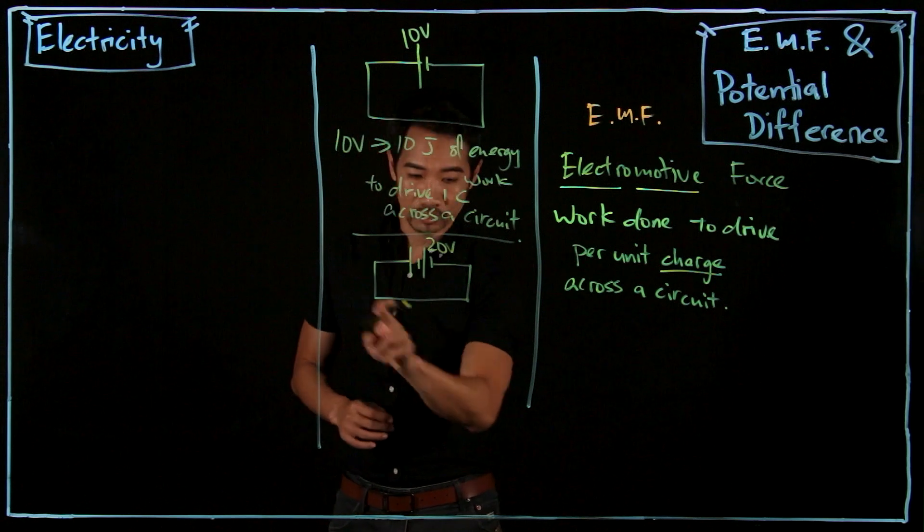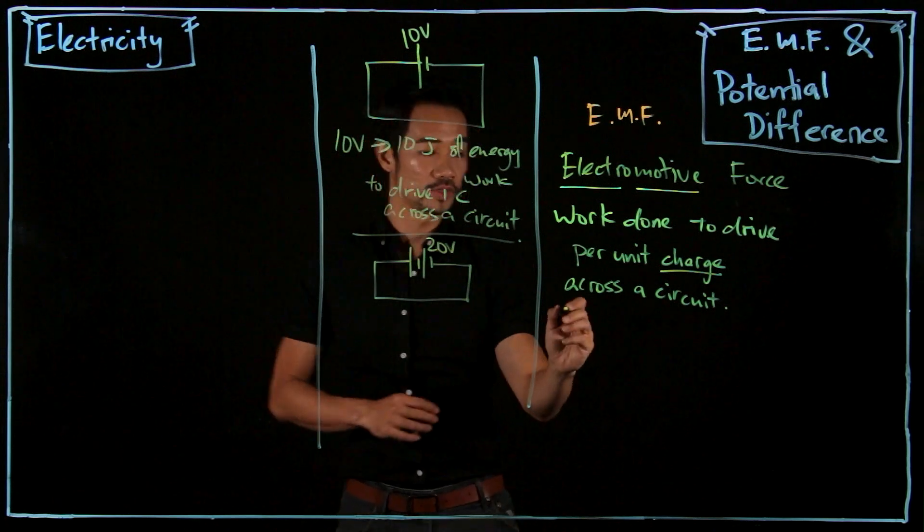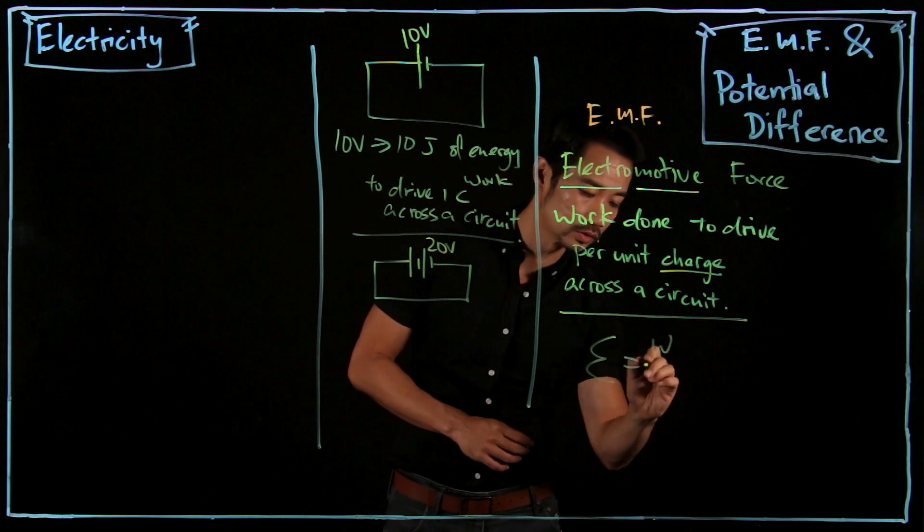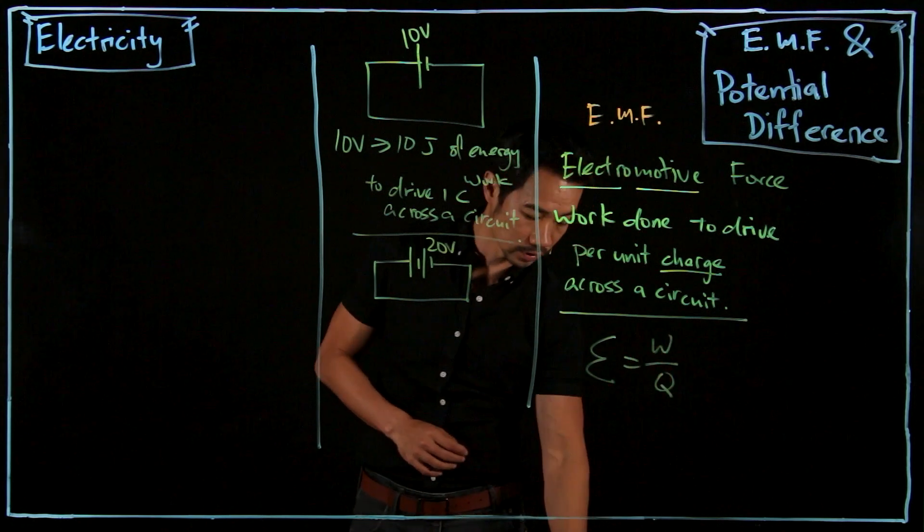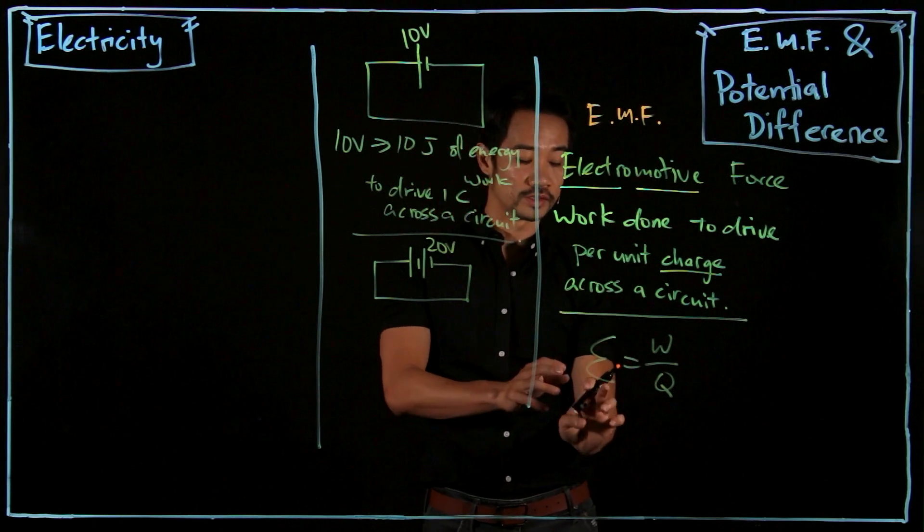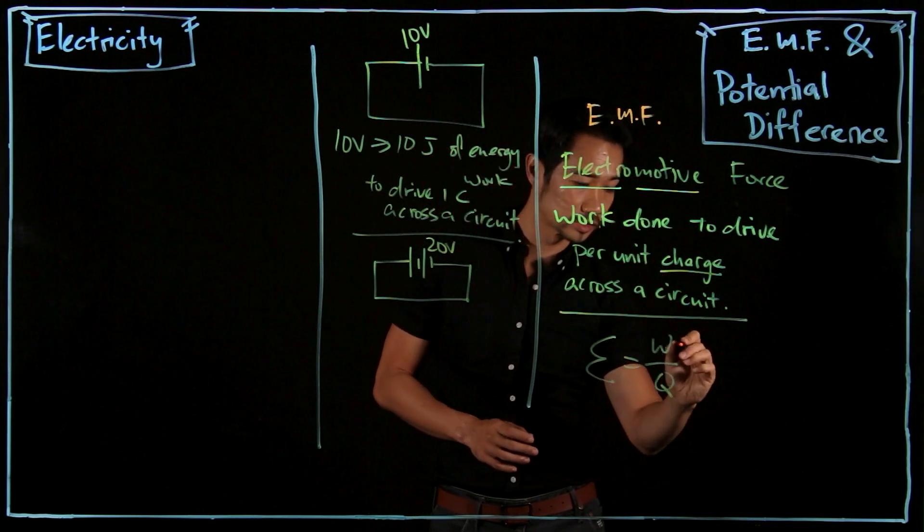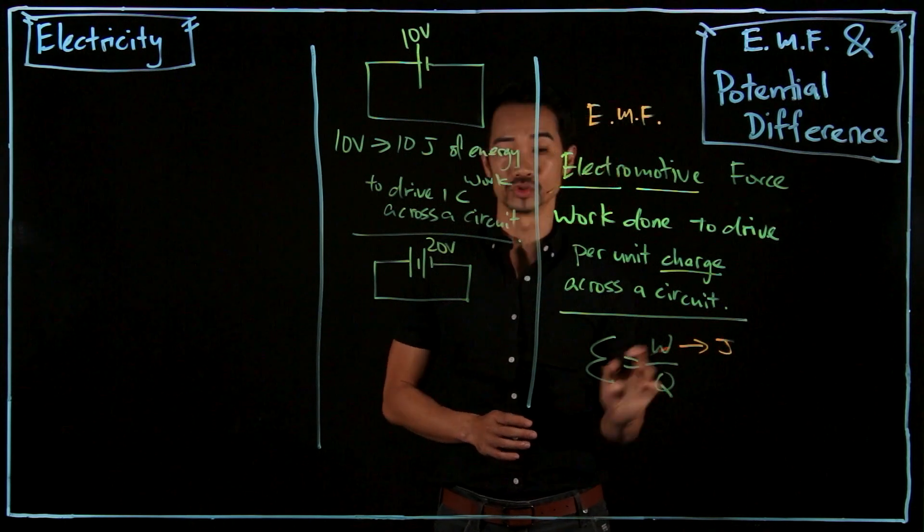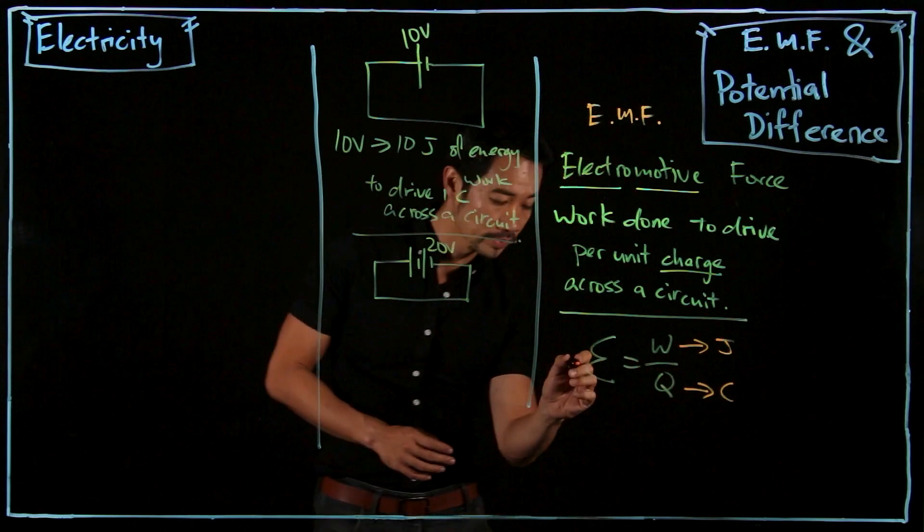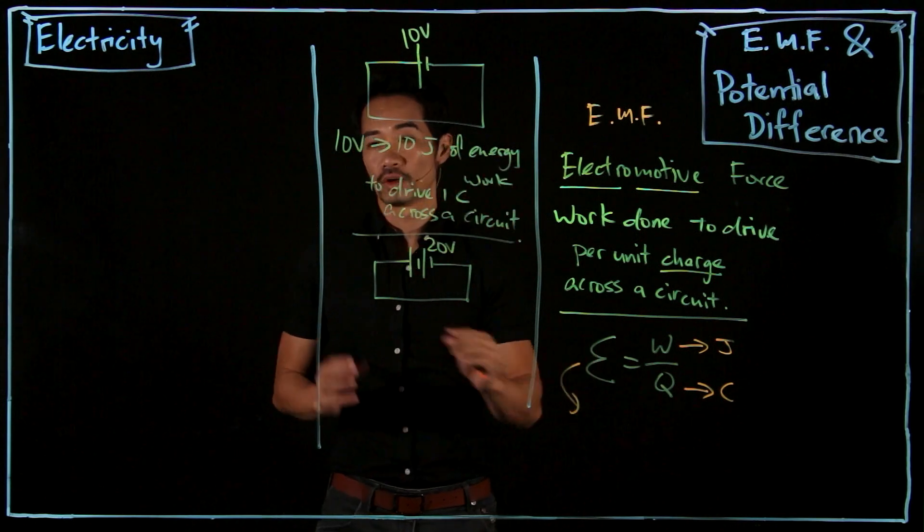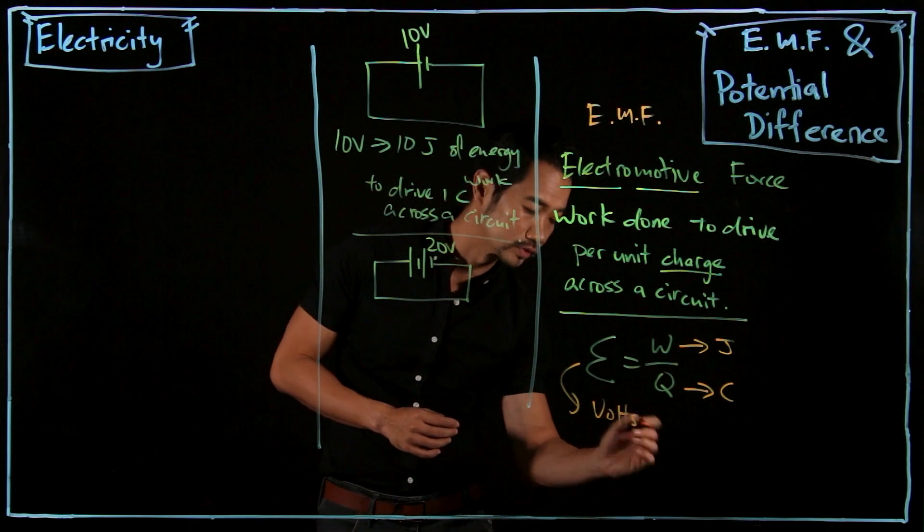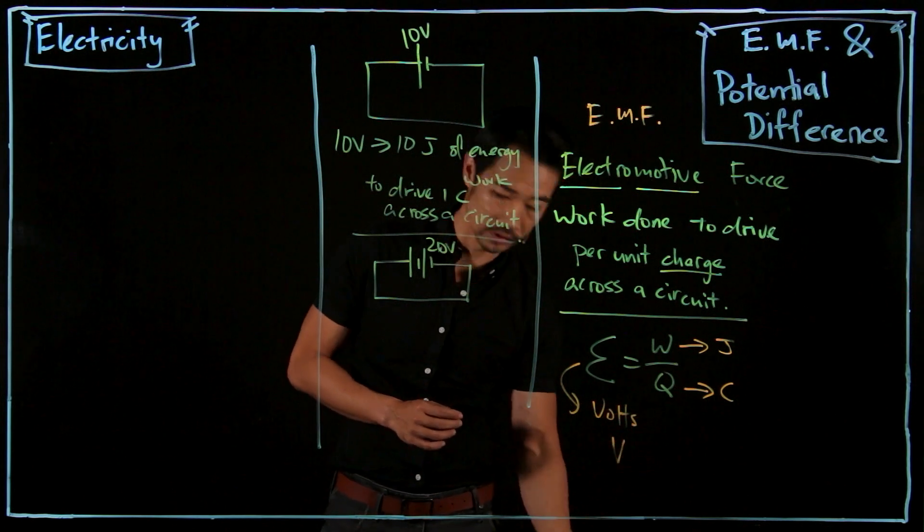What is the amount of work done when you drive across? We can also use a formula: E equals W over Q. So E here stands for your EMF, electromotive force. W is work done, calculated in joules. Charge is in coulombs. Your EMF is calculated in volts, or in short, V.